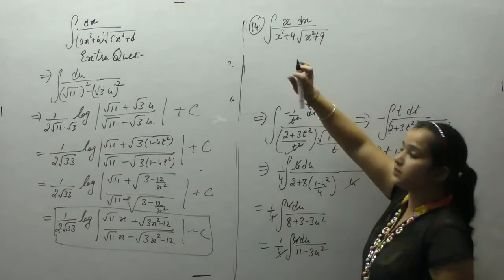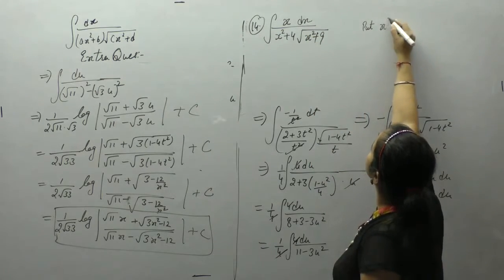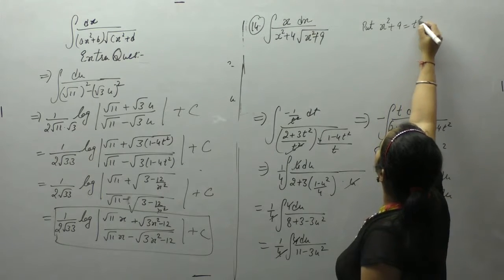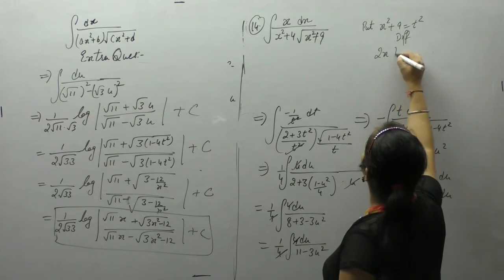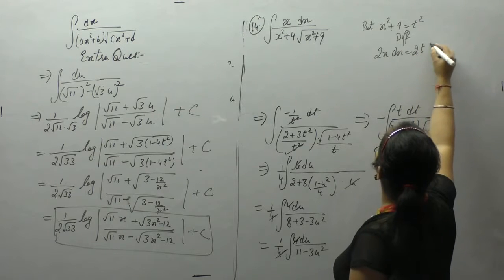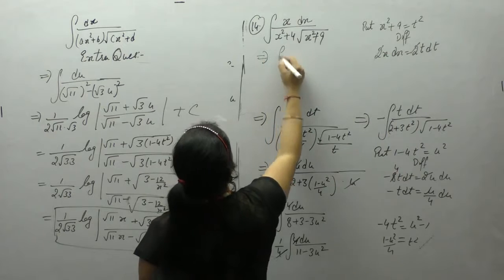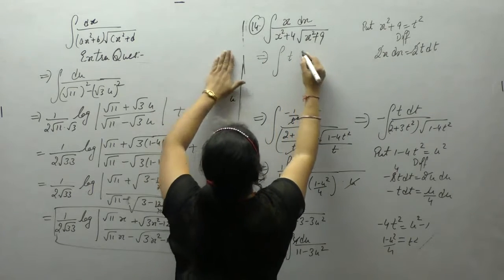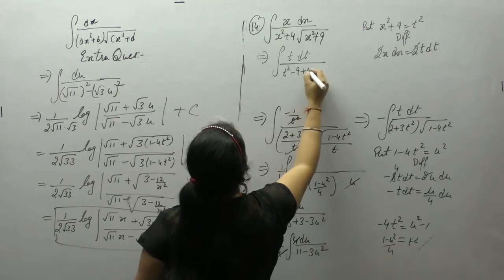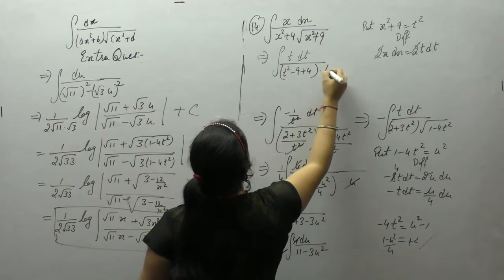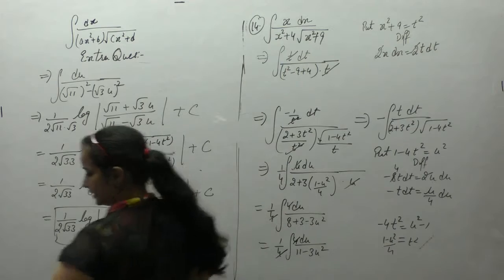We have x dx in the numerator, so put x² + 9 as t². Differentiating, 2x dx = 2t dt, so instead of x dx we write t dt. x² becomes t² minus 9, and the square root of x² + 9 is t.